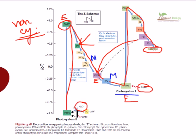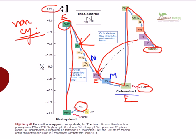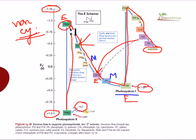All these processes of electron transfer from photosystem II to photosystem I, whether cyclic or non-cyclic, are governed by reduction potential. Complexes with a negative reduction potential donate electrons easily, while complexes with a positive reduction potential tend to accept electrons easily.